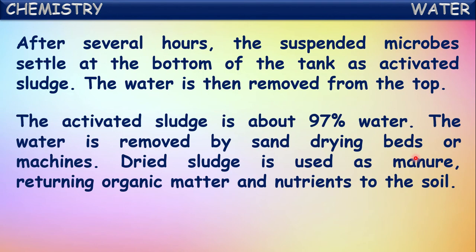The activated sludge is about 97% water, with the remaining portion being impurities. The water is removed by sand drying beds or machines. Dried sludge is used as manure, returning organic matter and nutrients to the soil.